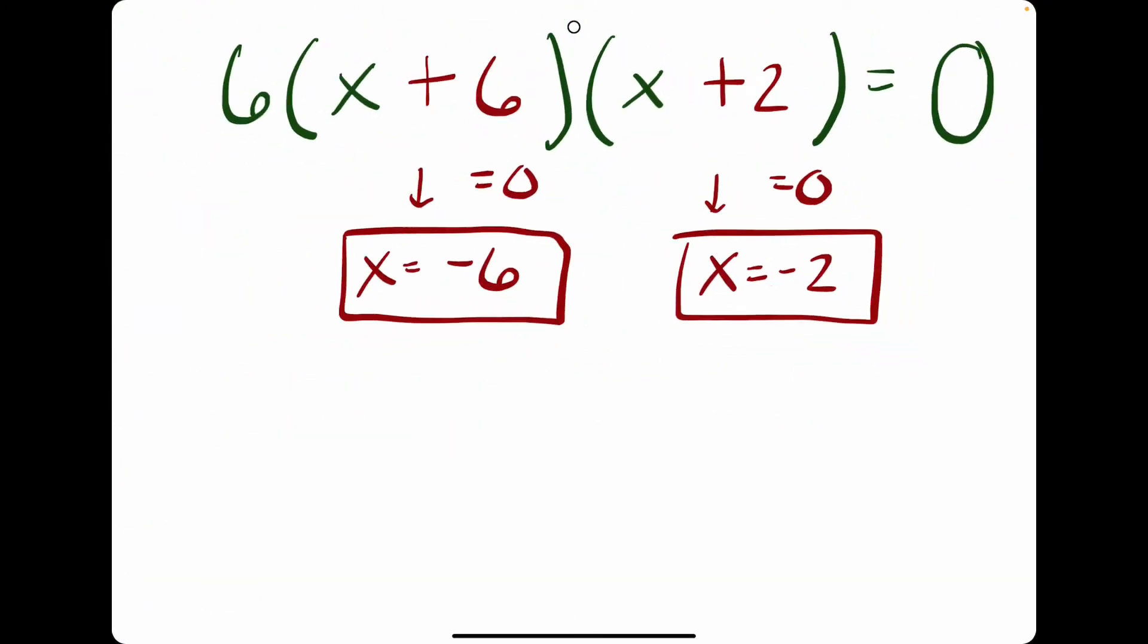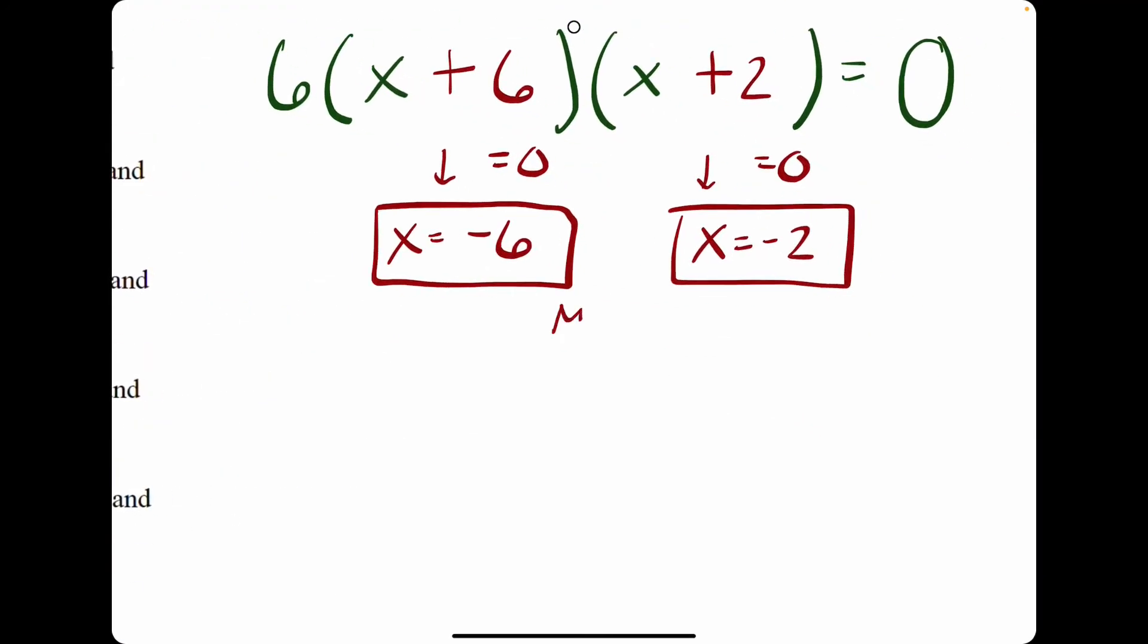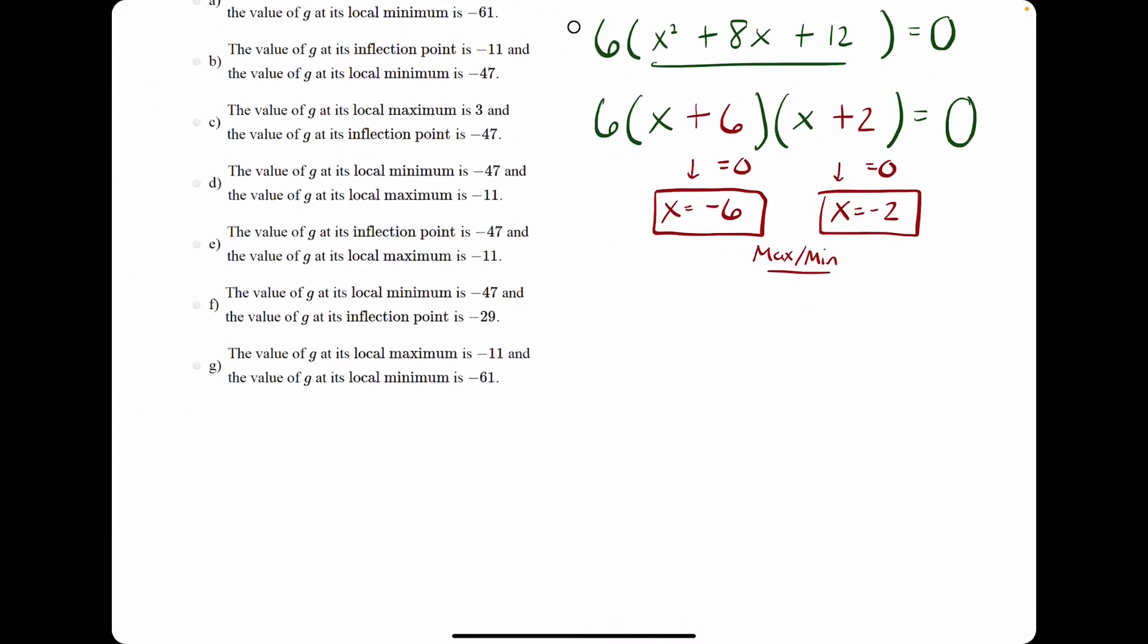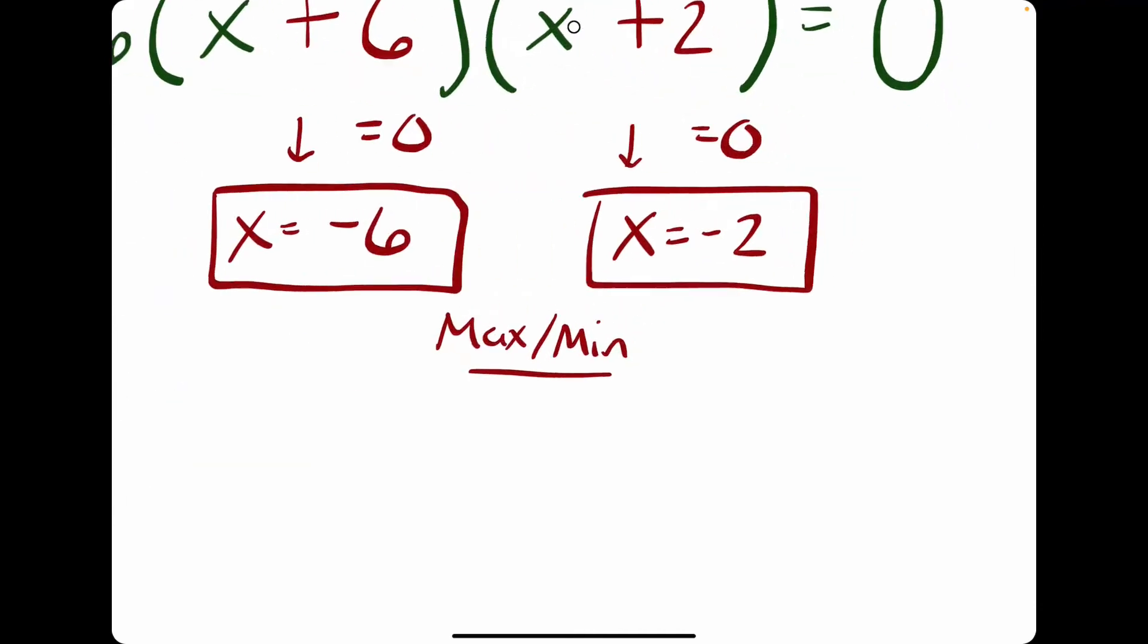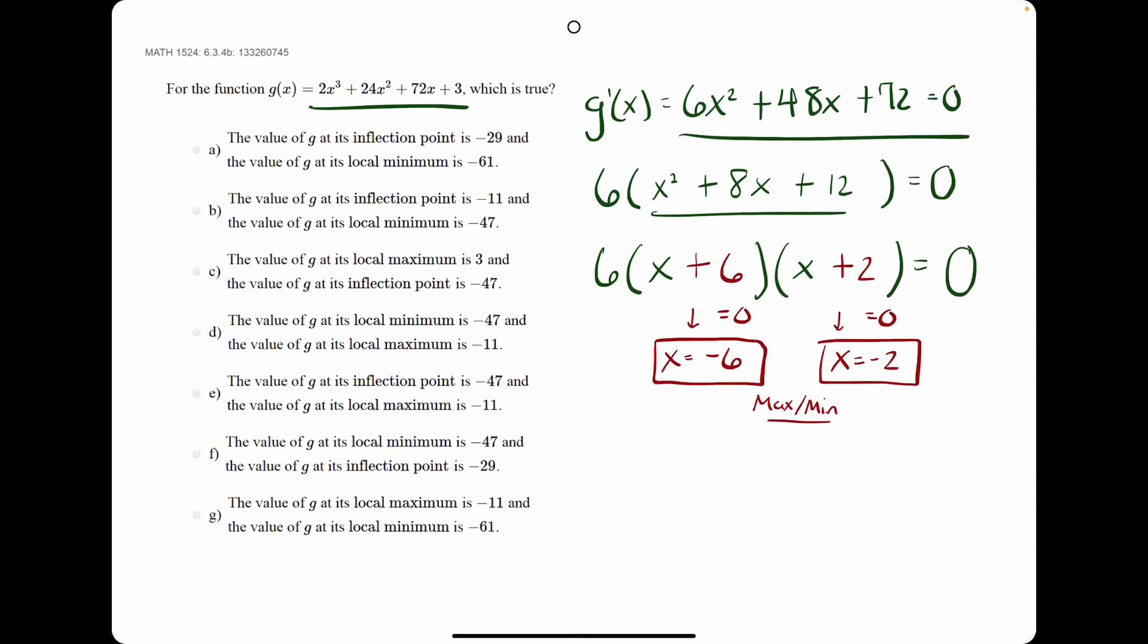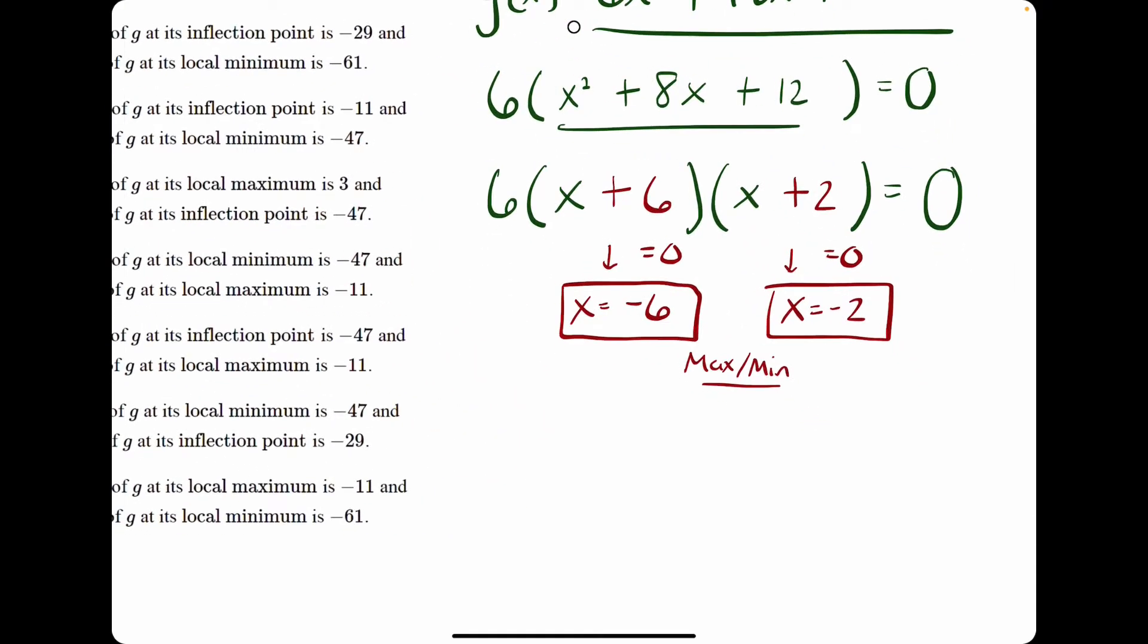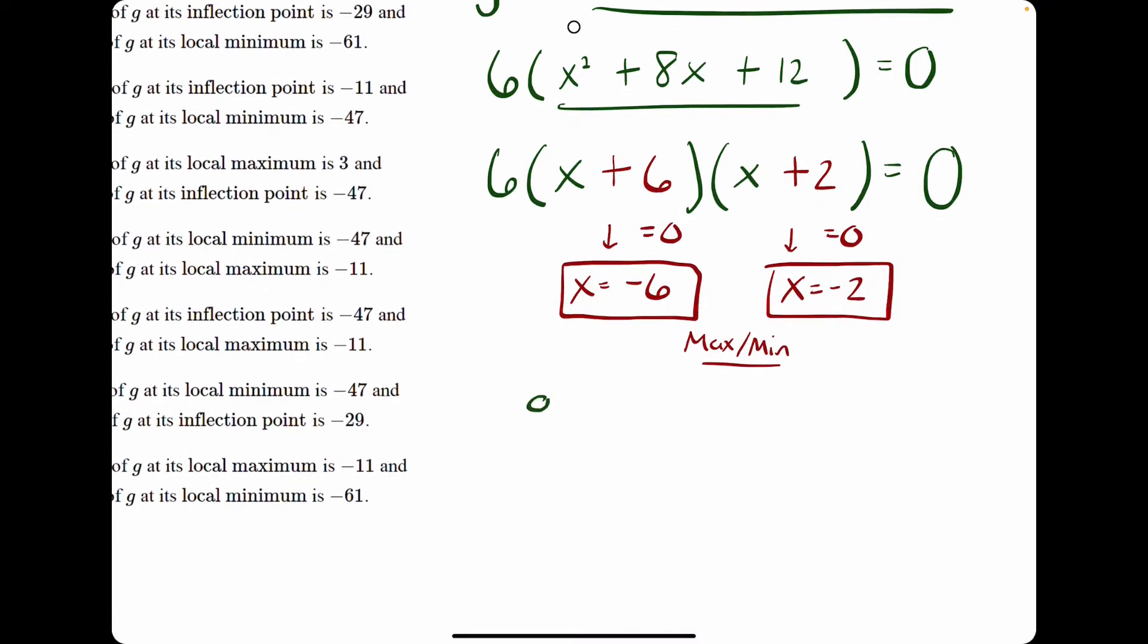These are the locations of our maxes and mins. The question is which one does the max exist at and which one holds the minimum. What we do is just plug these into g. We're going to find g of negative 6 and g of negative 2.